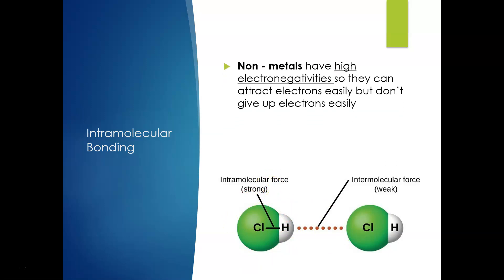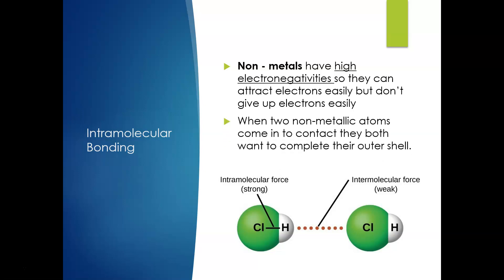Non-metals have high electron affinities so they can attract electrons easily and don't give up electrons easily. When two non-metallic atoms come into contact they both want to complete their outer shells. These non-metals have high electronegativity — remember they're in the top right of the periodic table, that's where the high electronegativity is — and that's because they can attract electrons easily but don't give them up. So two non-metals coming into contact both want to complete their outer shell.